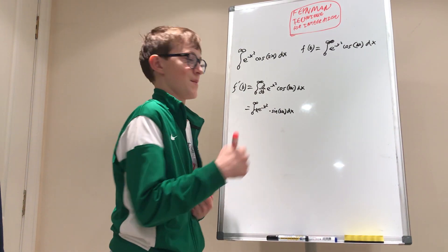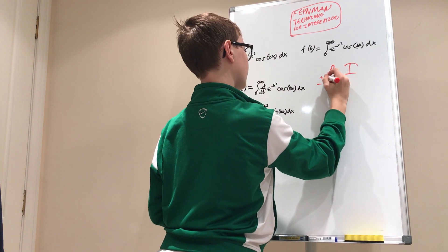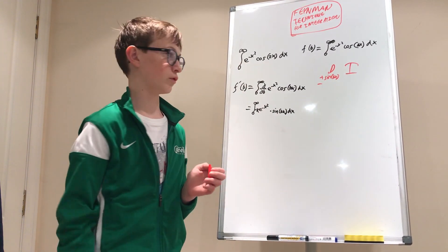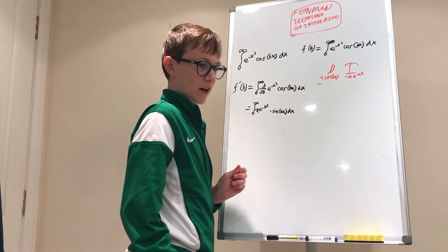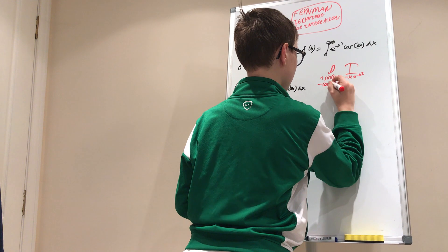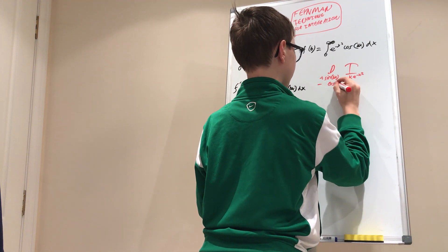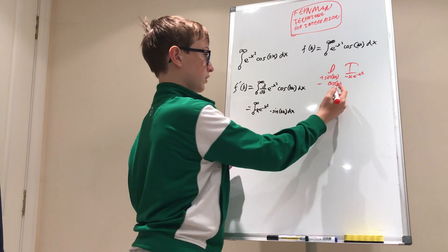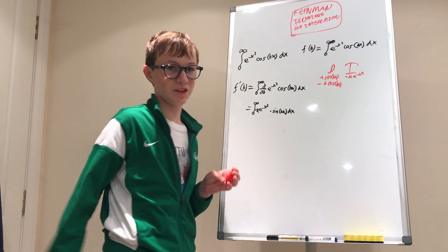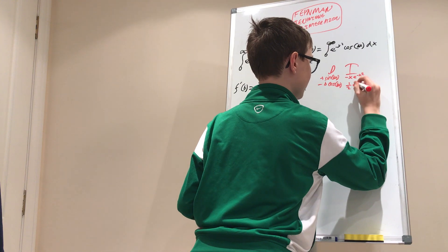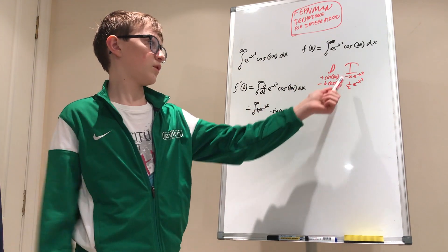So now we're ready to use the DI method. We're going to be differentiating sine of bx — in the x world, remember — and we're going to be integrating negative x times e to the negative x squared. The derivative of sine is positive cosine of bx times the derivative of the inside, which in the x world is just b. And the integral of negative x times e to the negative x squared using u-substitution gives us positive one half e to the negative x squared.